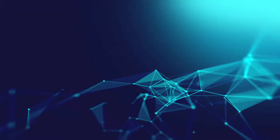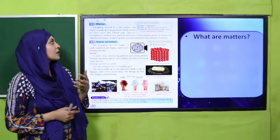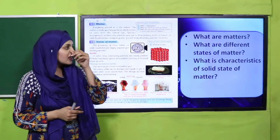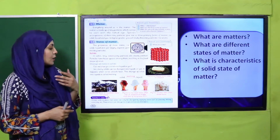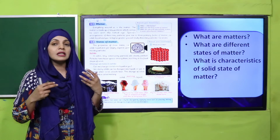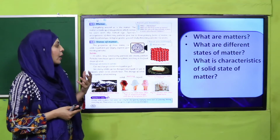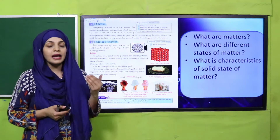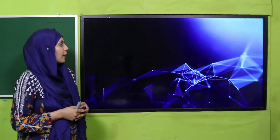In the first lecture we discussed about matter and their states. Everything around us is made up of matter, and there are three states of matter: solid, liquid, and gases. The main characteristic of solids is that they have a fixed and definite shape. Solid particles are tightly packed, and when heat is added to them they can change their state.